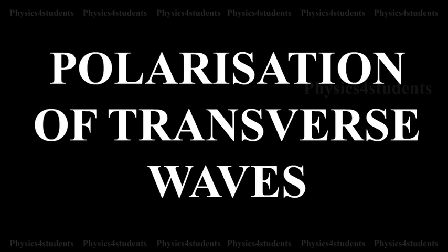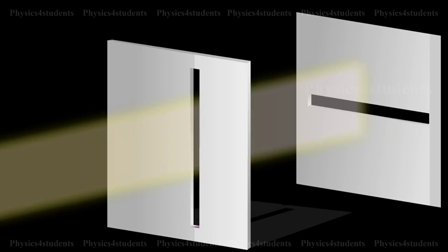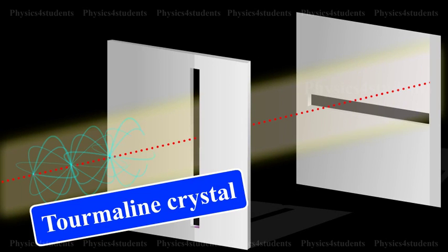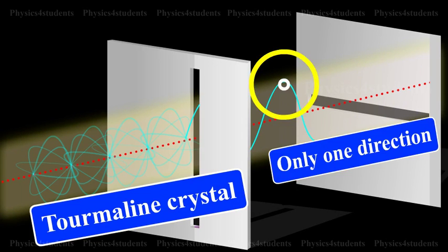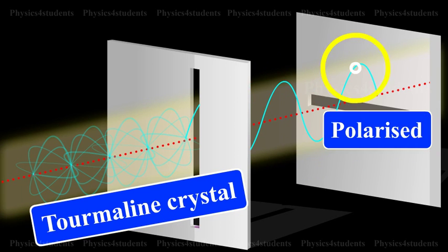Polarization of Transverse Waves. Light waves coming out of tourmaline crystal A have their vibrations in only one direction, perpendicular to the direction of propagation. These waves are said to be polarized.